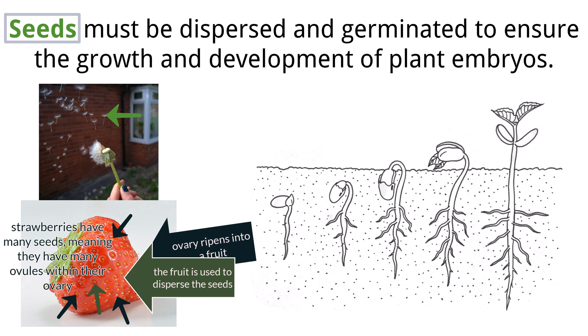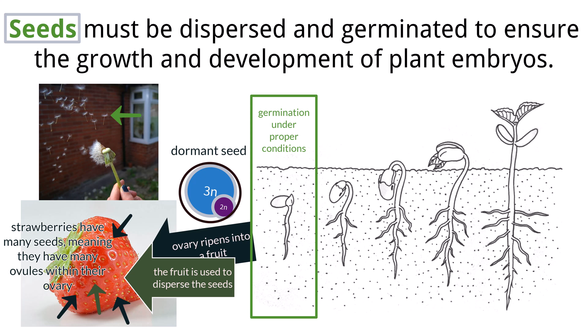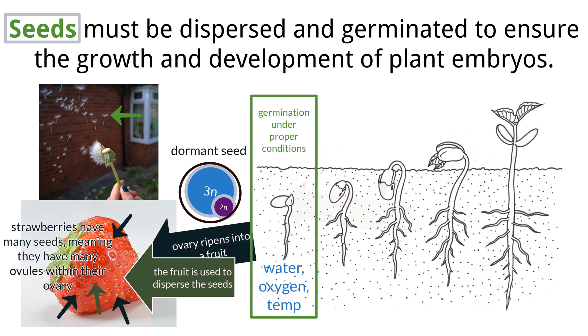Other forms of seed dispersal use wind and water as modes of travel. Once seeds are formed within the ovary, they become dormant. Dehydration occurs with the seeds losing much of their water content. During dormancy, there is no growth and very little metabolism. Seeds will germinate when the conditions are conducive for growth. Germination is the process of the seed beginning to develop into a plant. There are several conditions required for this, including water to rehydrate the seed, oxygen for cellular respiration, and an appropriate temperature. The seed contains a plant embryo that uses the endosperm as a source of energy until it grows and develops leaves for photosynthesis. The endosperm tissues, which are the food reserves, are transferred to the developing embryo by the cotyledons.